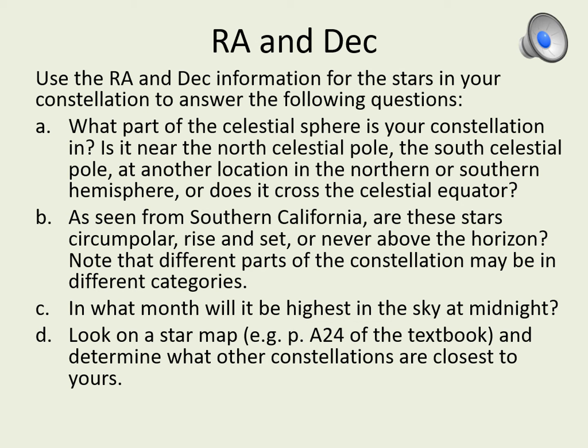Declination is like latitude. It tells us how far north or south the object is. In this question, we're going to use the right ascension and declination information for the stars in your constellation to help you figure out when the constellation is highest in the sky and how it appears to move in the sky from our location.